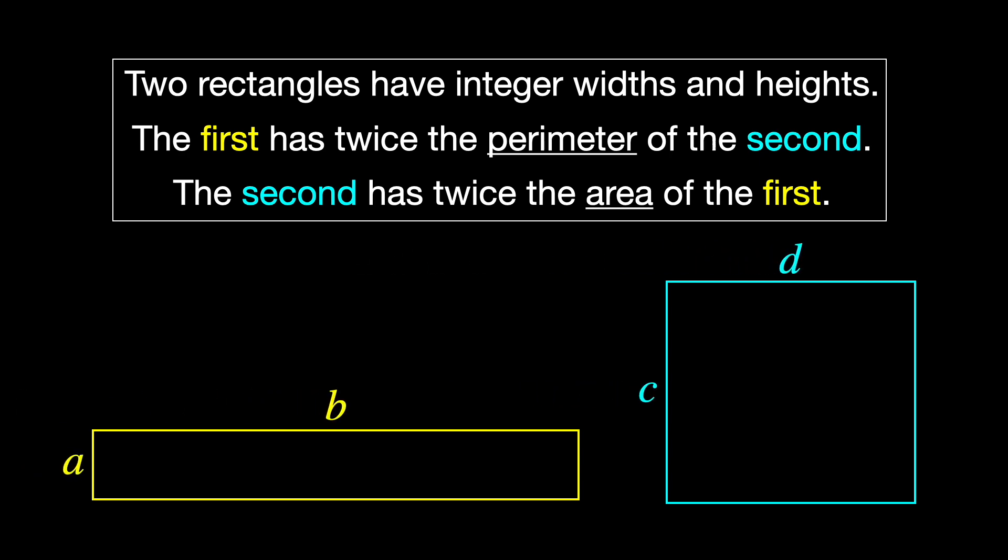Then the perimeter is just the sum of all four sides, so it can be written as two A's plus two B's and two C's plus two D's. And the puzzle says that the first rectangle's perimeter equals twice the second rectangle's perimeter. And we can divide both sides by two to simplify. The areas are the products of the two sides, and the puzzle says that twice the area of the first rectangle equals the area of the second.